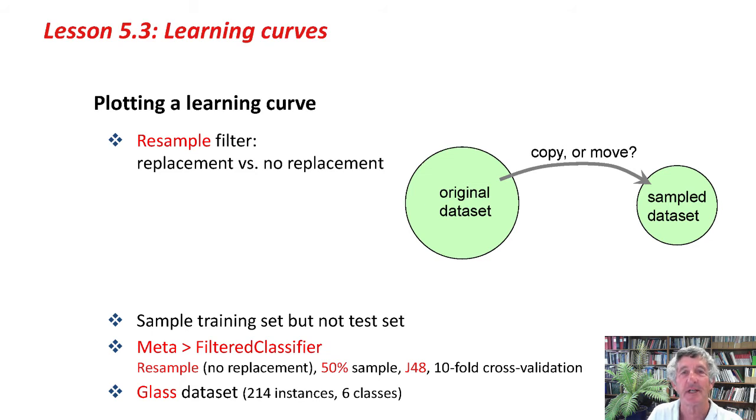We're going to sample the training set, but not the test set. We want to find out how performance changes as the size of the training set increases, but the test set determines the reliability of our estimate. We don't want to make that artificially smaller, so we always want to use the same size test set.